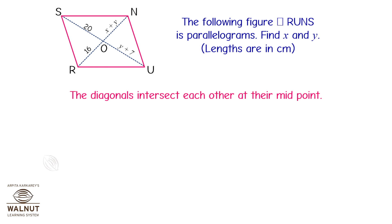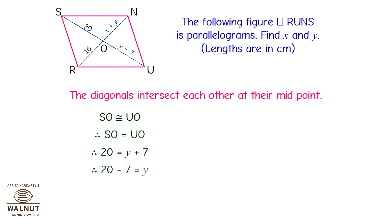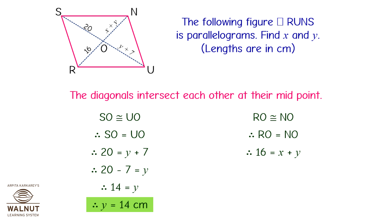Considering diagonal SU, since diagonals bisect each other, SO equals UO. Substituting values: 20 equals Y plus 7, so Y equals 13 centimeters. For diagonal RN, RO equals NO, so 16 equals X plus Y. Substituting Y equals 14: 16 equals X plus 14, giving X equals 2 centimeters.